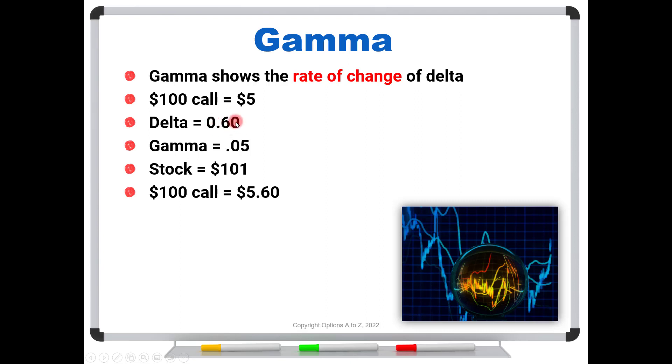So we should pick up 60 cents of that dollar move. We would expect the $100 call to be trading for $5.60. But what about the delta? Will delta always stay at 60? Not at all. It's going to change. By how much? By gamma. So once the stock makes this dollar move, we get a new delta, which equals the old delta of 60, that's right there, plus gamma of 5 right there. We would have a new delta of 65.